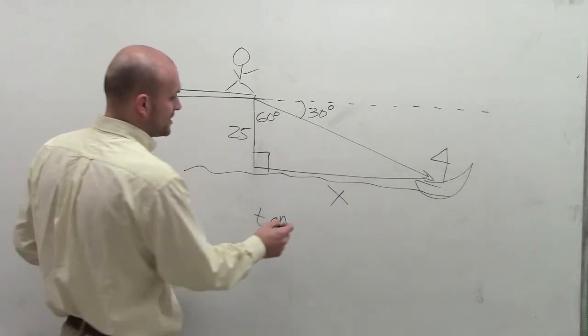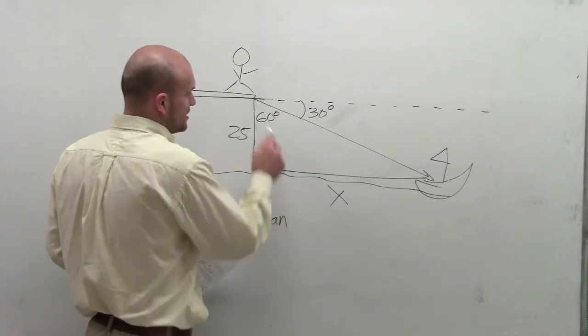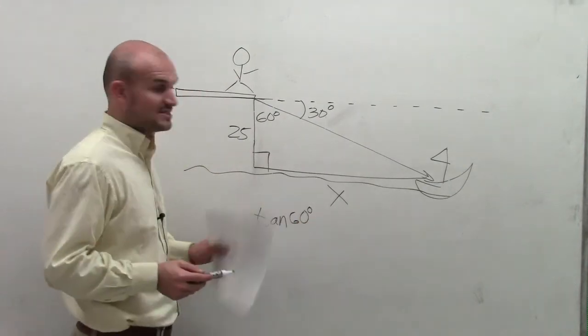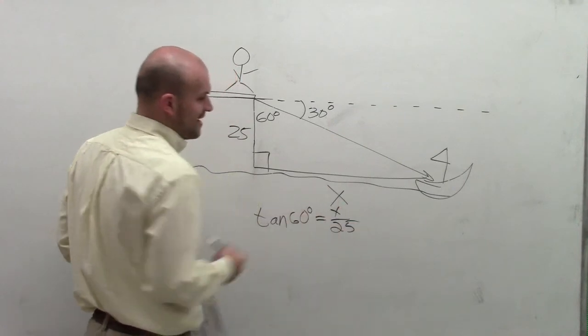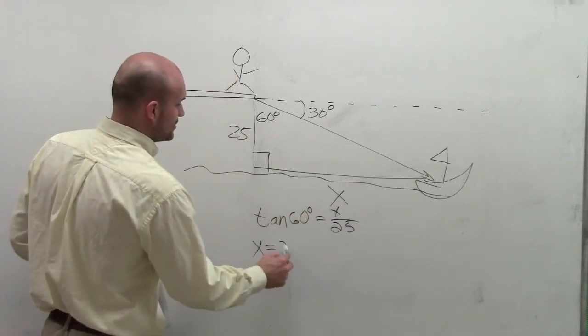When I have a triangle and I'm having the opposite and my adjacent side, I know I'm going to use tangent of theta. Tangent of my theta, which is now 60 degrees, is going to equal x over 25.